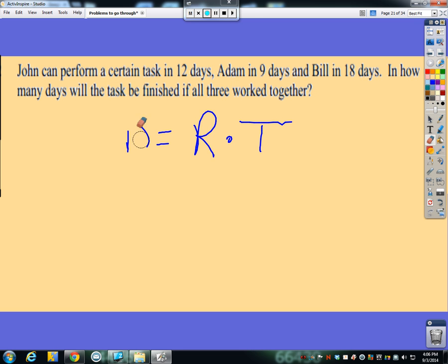But we're going to apply this instead of being distance equals rate times time, we're going to think of this as jobs or tasks equals rate times time. Now, we have to have three of these equations because we have three people. So I'm going to put little sub j's here for John, little sub a's for Adam and sub b's for Bill. John's jobs equals his rate times his time.